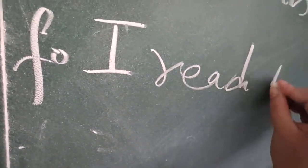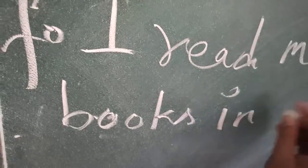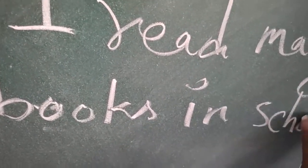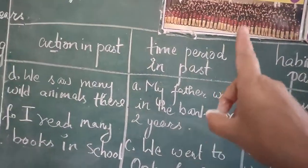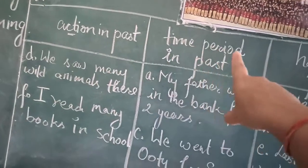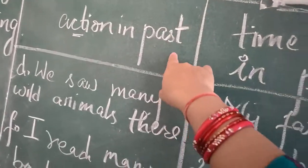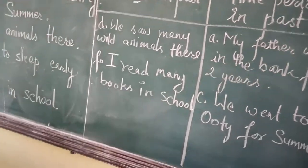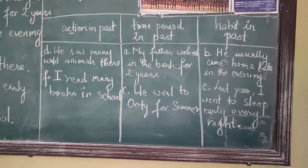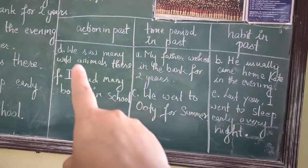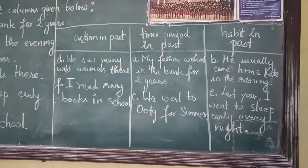Don't forget that all these sentences indicate the verb in the past tense — this is the simple past form of verbs. We have divided six sentences into different columns: Action in past, Time period in past, and Habit in past. To recap: A is time period in past, B is habit in past, C is time period in past, D (we saw many wild animals there) is action in past, E is habit in past, and F is again action in past. Hope this is clear.